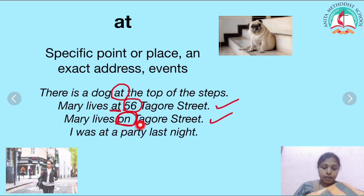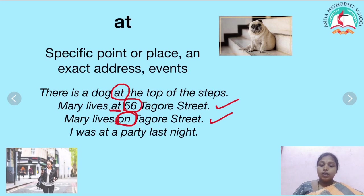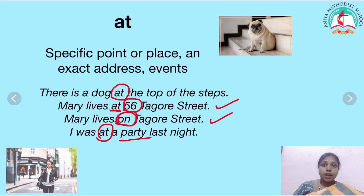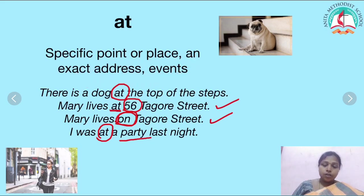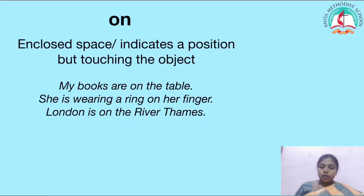I was at a party last night. Here I have used at because party is an event. So at is used for a specific point or place, an exact address, and events.